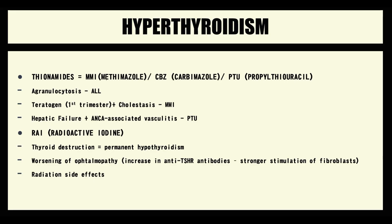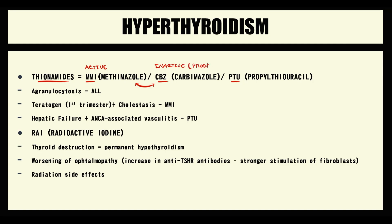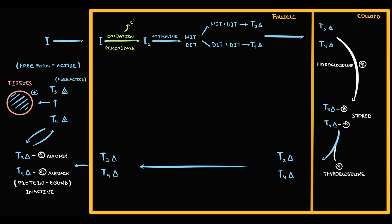The first-line treatment of hyperthyroidism is thionamides. We have three different thionamides: methimazole, carbimazole, and propylthiouracil. They all block a specific enzyme called peroxidase, decreasing the production of thyroid hormones. Methimazole and carbimazole are essentially the same drug — methimazole is the active form and carbimazole is the prodrug inactive form.